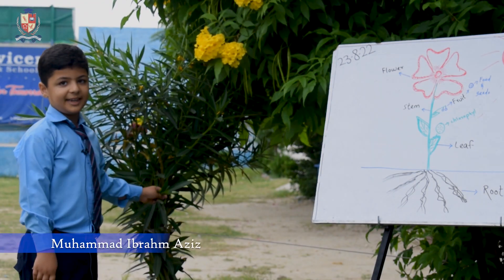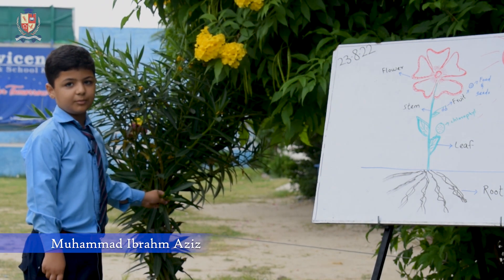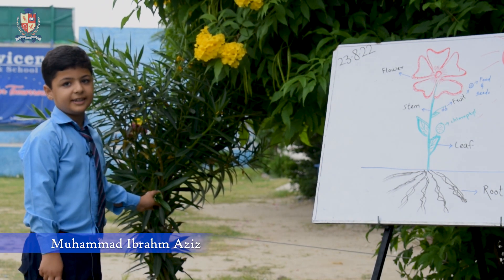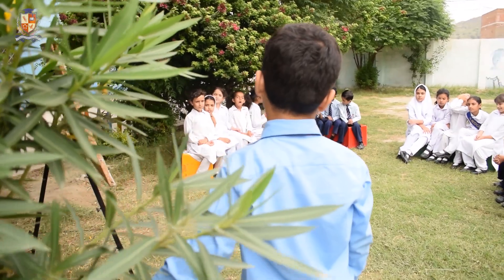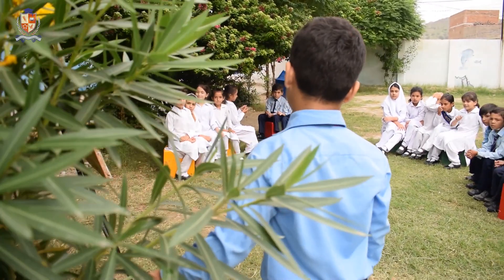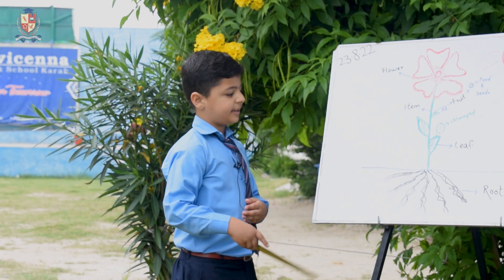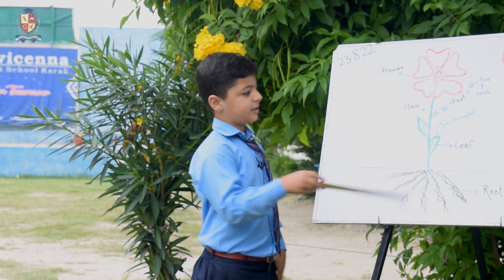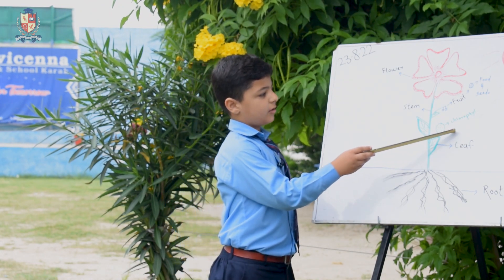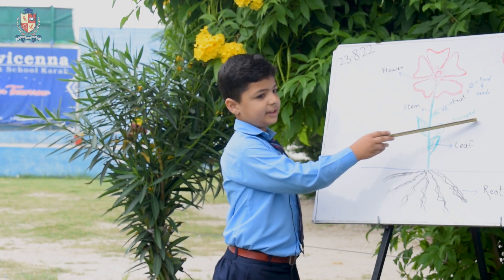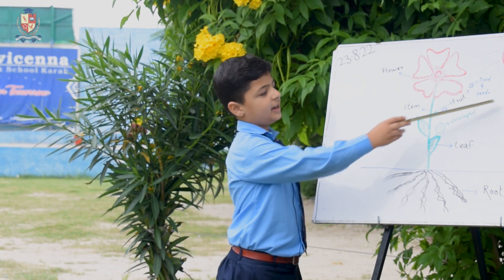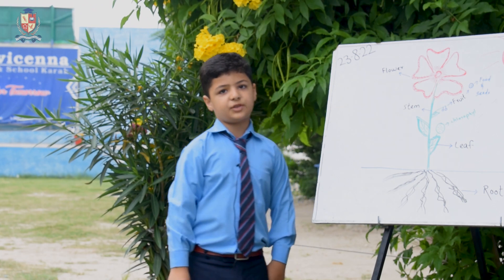These are leaves. It is the most important part of a plant. It is green and has a green pigment called chlorophyll, which absorbs sunlight and makes food.